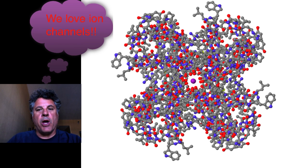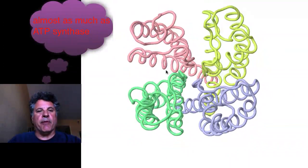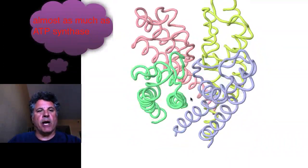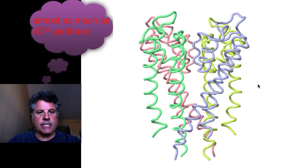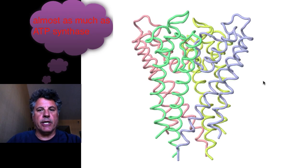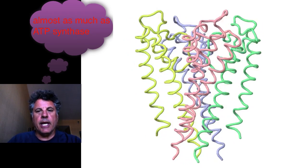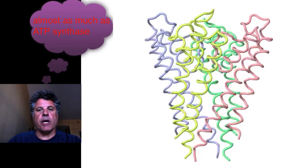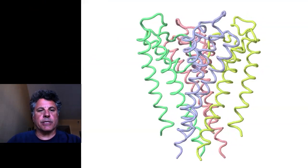All members of the potassium channel family are made up of four monomers that are brought together, shown in different colors here. So this is a tetrameric channel, and each of the four monomers has different parts.